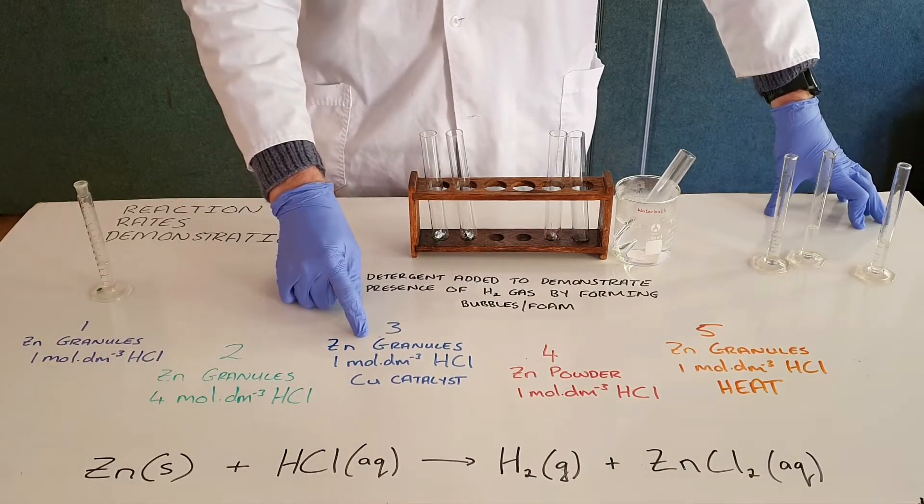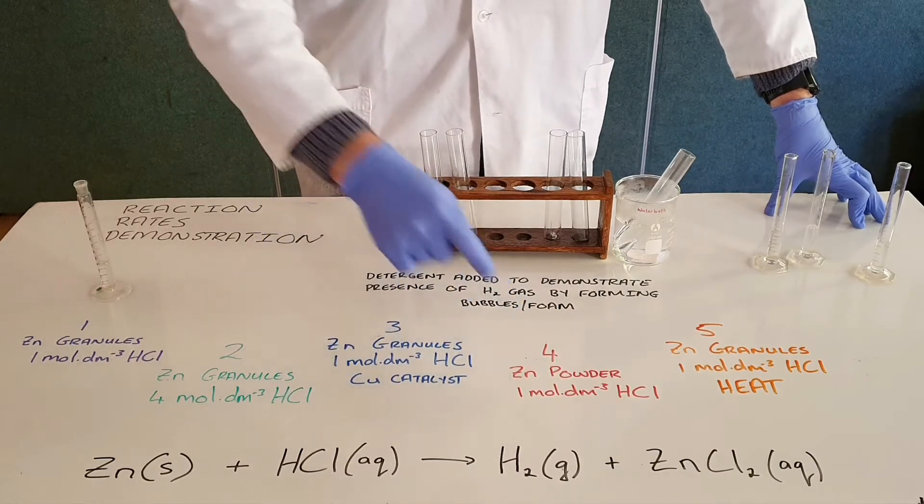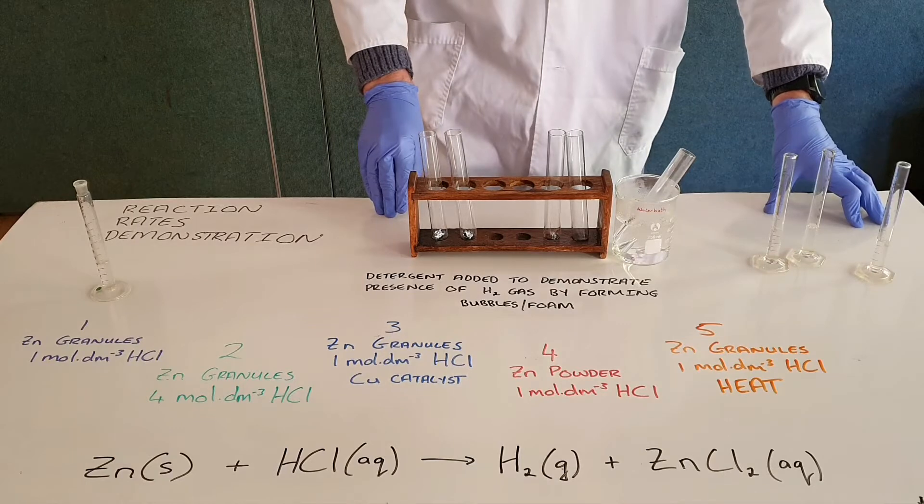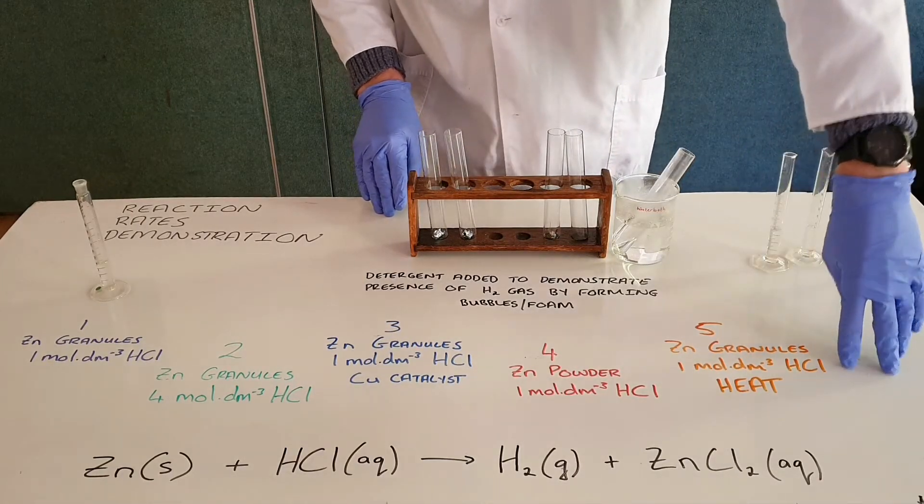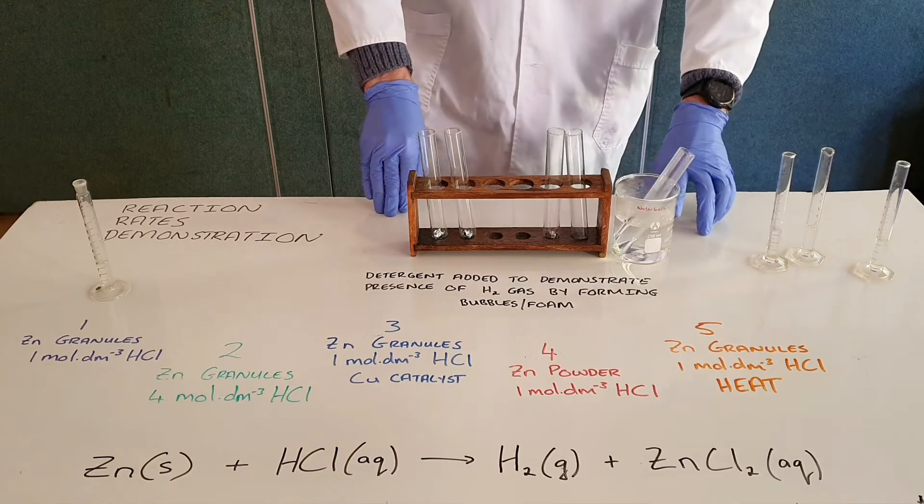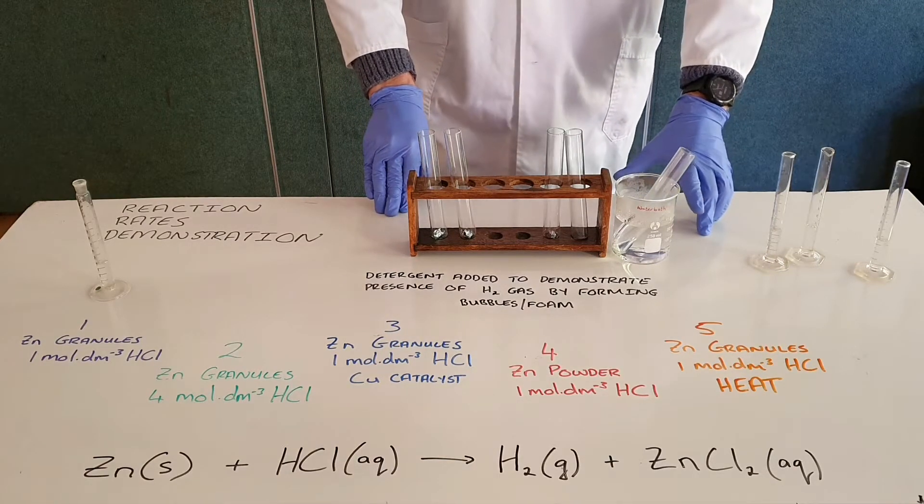The fourth test tube has zinc powder with the 1 molar hydrochloric acid solution, and the fifth test tube has zinc granules and 1 molar hydrochloric acid but placed in a hot water bath to speed up the rate of reaction there.